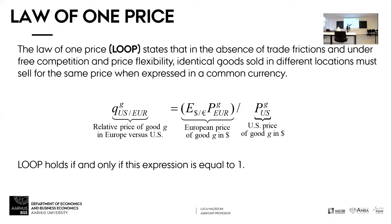You have the price in euros for a particular good times the exchange rate dollar per euro. That gives you the number of dollars you need to pay for that particular good in Europe. Then you divide that by the price of the US good in dollars. That is your relative price of the two goods.